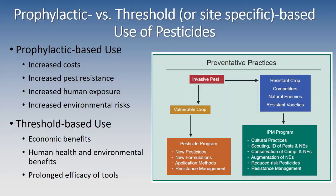We also looked at prophylactic versus threshold or site-based use of pesticides. Prophylactic-based use can have some negative effects: it can increase costs of production, increase pest resistance, increase human exposure to pesticides, and increase environmental risks. Threshold-based use, on the other hand, should have economic benefits, human and health benefits, and also prolong the efficacy of our crop protection tools.